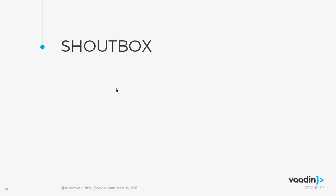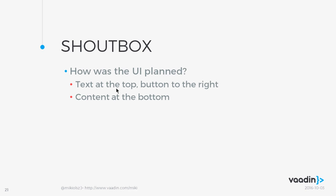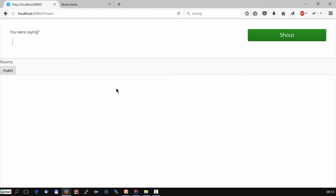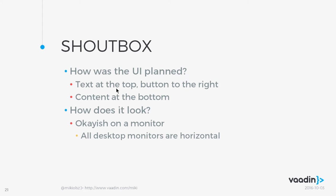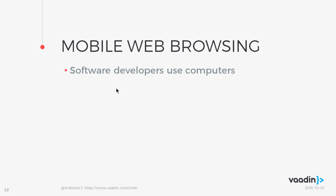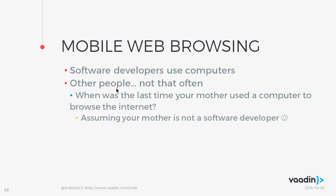Let's talk about the mobile-first approach. Let's come back to our Shoutbox application and how the UI was planned. From the very beginning, I had a clear idea of having text at the top, the button on the bottom right, and the content filling up the rest of the screen. It looks quite okay on a monitor because desktop monitors are horizontal — they have more pixels from left to right than top to bottom. Did I ever resize the browser window while developing or even think about it? That's actually a good question — I never thought about that.